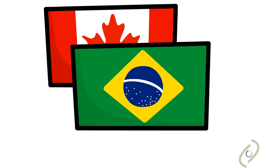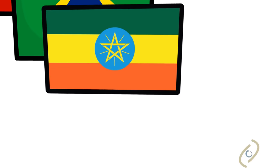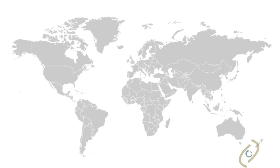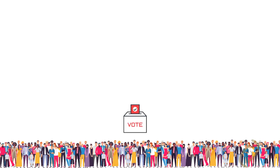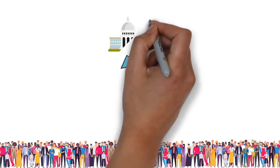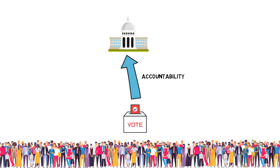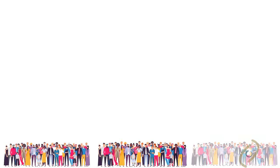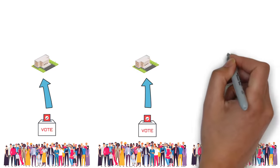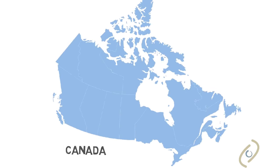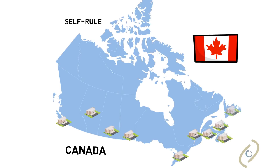Here are some examples of federal countries: Canada, Brazil, Ethiopia, Malaysia. While less than 30 countries are federal, they represent almost half of the world's population. One important feature of a federal system is that all orders of government are directly elected by their citizens. The citizens of the whole country elect the federal government, and the people within constituent units elect the government of their own states and provinces, and often their own local governments.